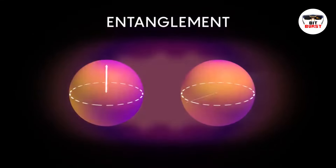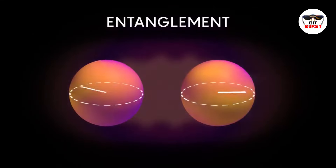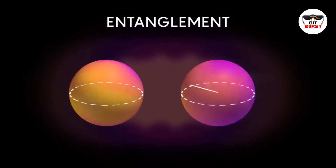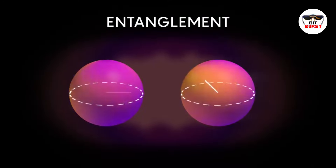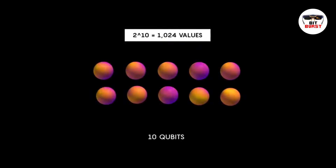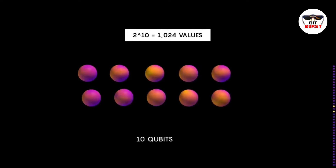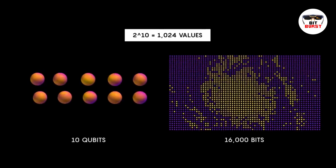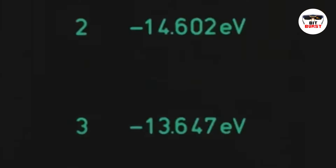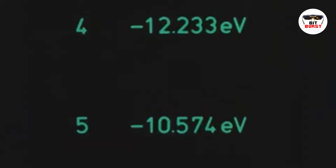Entanglement, another quantum marvel, links qubits. A change in one qubit instantly affects another, irrespective of the distance between them, allowing quantum computers to process information in ways classical computers can't. These principles form the backbone of quantum computing, empowering it to tackle complex problems beyond the capabilities of classical computers.